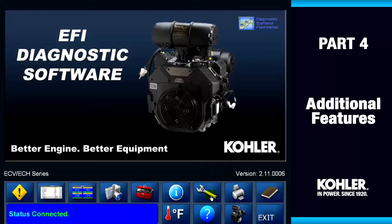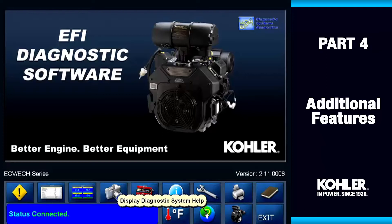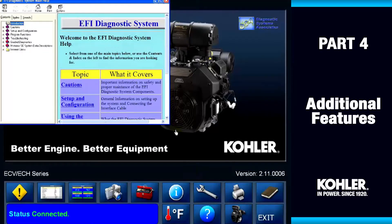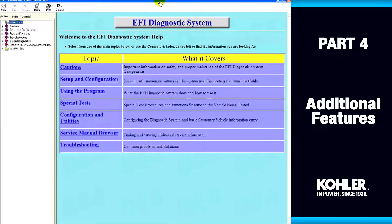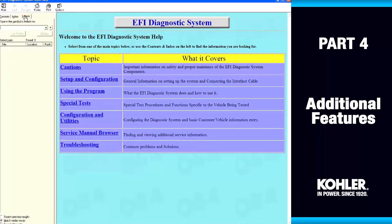This is the System Help button. It contains the most complete and updated information on the EFI diagnostic software. You can search by topic or use the search bar. System Help is automatically updated whenever there are software updates.